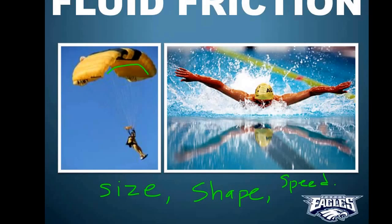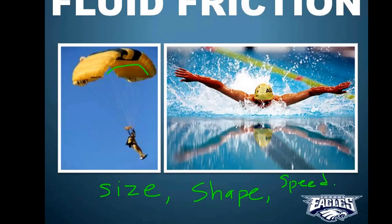You've learned all about the four different types of friction: static, sliding, rolling, and fluid. You also learned how strong they are — static is pretty strong, sliding is a little bit weaker, and rolling is even weaker than that. Fluid friction depends on the scenario — on the size, shape, and speed of the object.